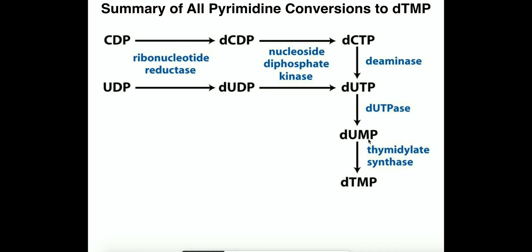A couple of things about DUMP: first of all it has one phosphate — it's a monophosphate nucleotide. The nitrogenous base is uracil, and we've already exchanged the ribose for its deoxy form, deoxyribose. That was accomplished by the enzyme ribonucleotide reductase. Now we're going to look at what happens when we convert DUMP into DTMP.